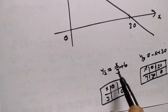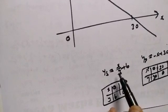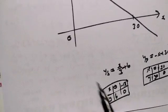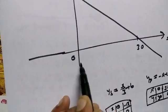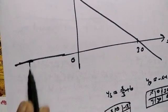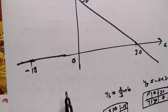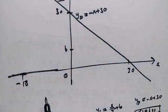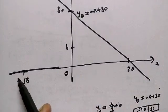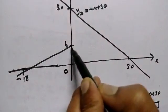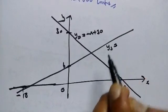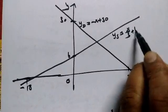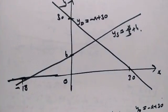For the second equation — supply: ys equals x by 3 plus 6. When x equals 0, y equals 6. When y equals 0, x equals minus 18. So the supply line passes through (0, 6) and (minus 18, 0). Thanks for watching.